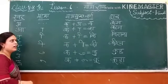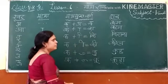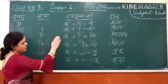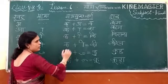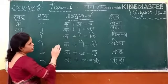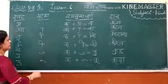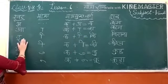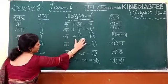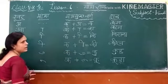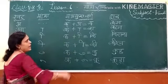दो मिलकर बनेगा का। इसके साथ मिलाकर आएगी का। इसके मिलाकर बना बड़ा है का। अगर हम यहां पर का की जगह न लगाएं तो हमारा वर्ड बन जाएगा नव। छोटी इ की मात्रा का गेंचन, प्लस छोटी इ की मात्रा मिलकर बनेगा — इसके सामने आएगी किक।